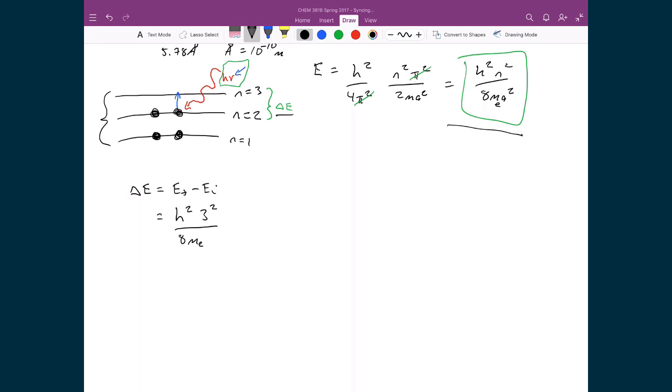And remember, a is the length of my box, and that is this 5.78 times 10 to the minus 10 meters, because that's the length of the box itself. That's the length of the conjugated molecule that we're looking at for butadiene.